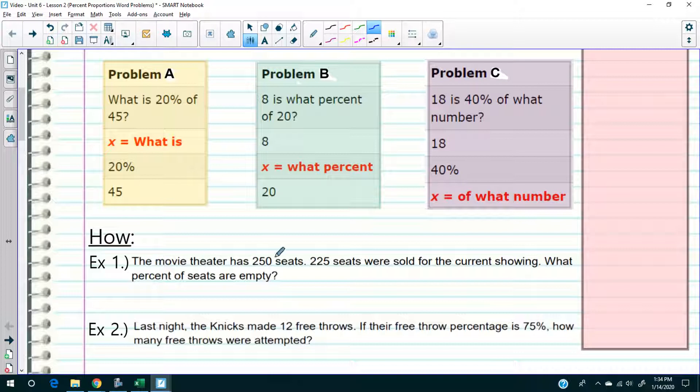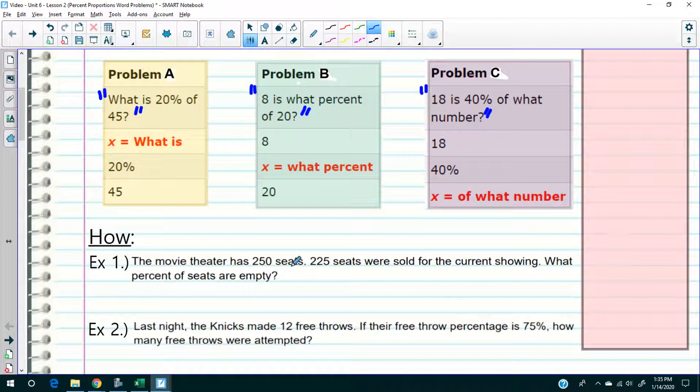The movie theater has 250 seats. 225 seats were sold for the current showing. What percent of the seats? Now think about this - if you choose to, you can reword this into a type A, type B, type C. Looking at this question, do you think this is a type A, type B, or type C question? I'm asking you what percent. Which of these questions has what percent as a phrase? That's right, B. This is a type B question.